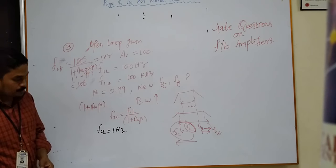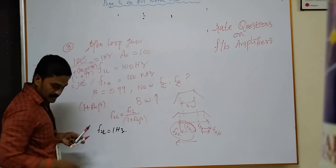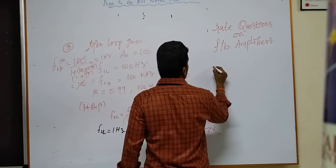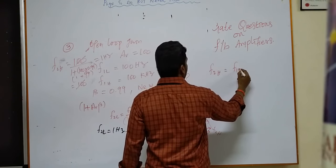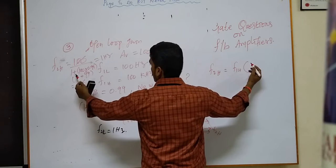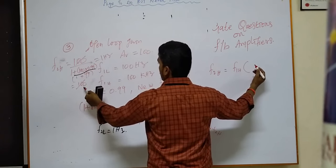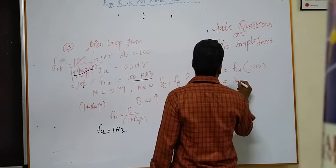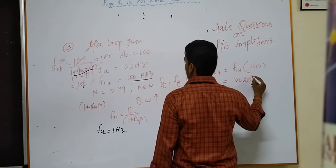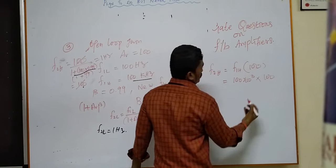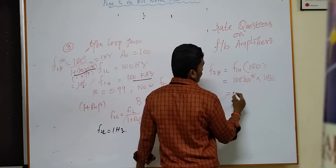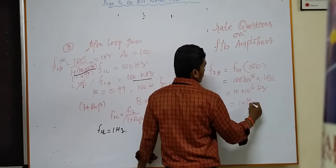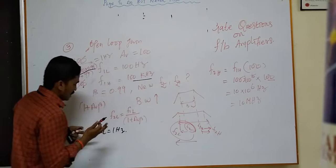Similarly, F2H is increasing, so F2H = F1H × (1 + Av·β). F1H = 100 kHz = 100 × 10³, multiplied by 100 (which is 1 + Av·β). That gives 100 × 10³ × 100 = 10 × 10⁶ Hz, which is 10 MHz.